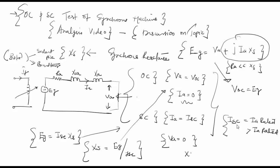So my XS can be given as VOC divided by ISC and this is for a field current which is equal to constant or a specific field current. This is how you can find your synchronous reactance based on the open circuit or the short circuit test.